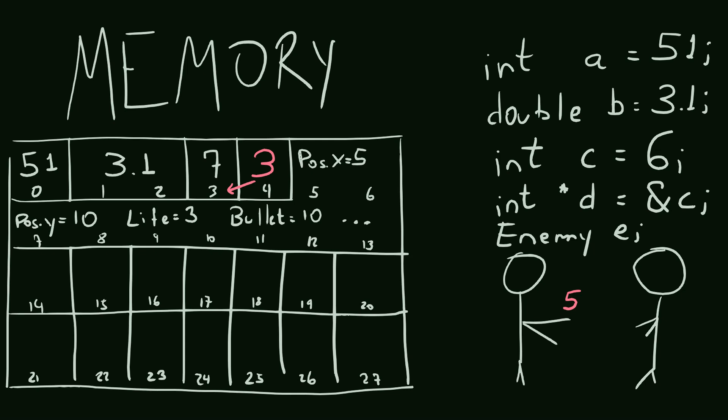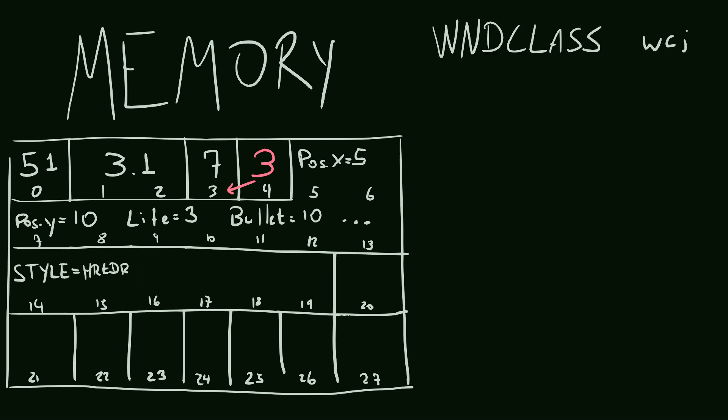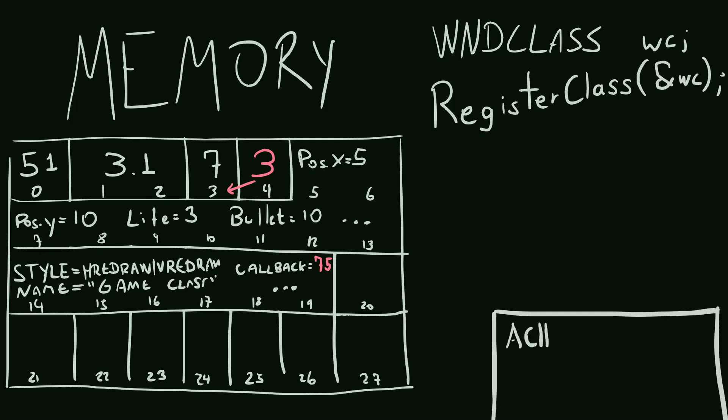When we created the window class, we got a locker, and we filled that with some information we needed. Now whenever we're going to pass a pointer to the register class, we're going to pass the number of the locker, or the address of the variable.